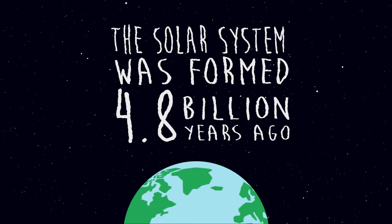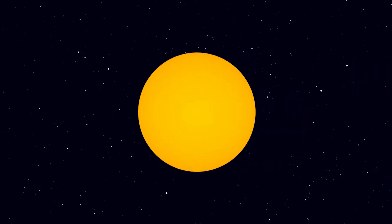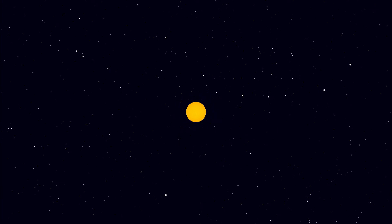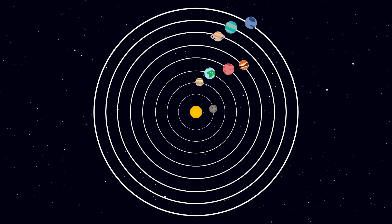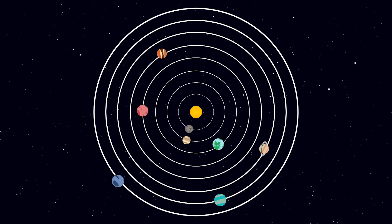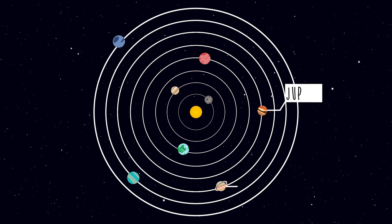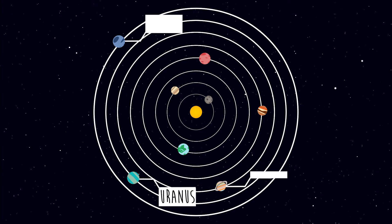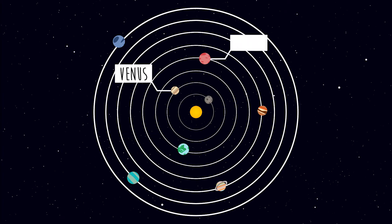The solar system was formed approximately 4.8 billion years ago. The Sun is at the center of our solar system and is around 4.6 billion years old. At its center, the Sun can reach a temperature of 15 million degrees Celsius.